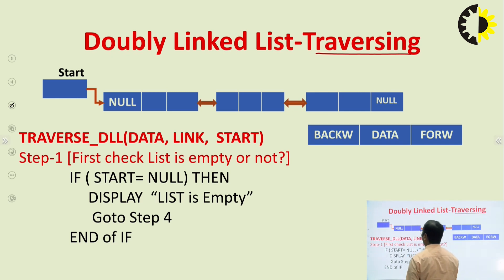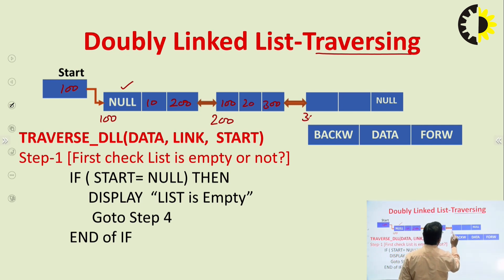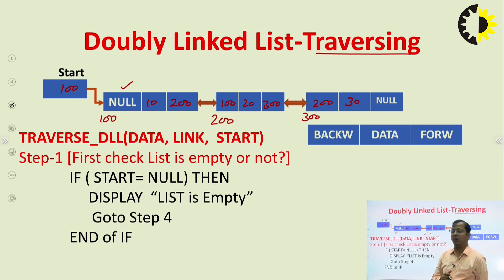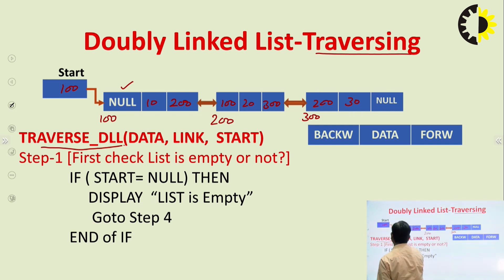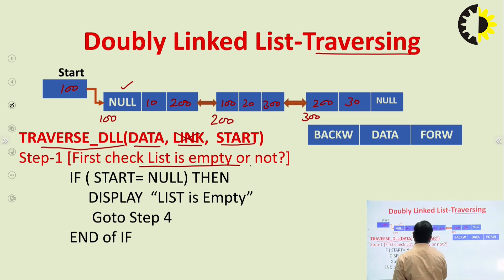Here we have taken one example. The first node has address 100. We have to traverse it, and in the traversing we are printing the value of each node. So we will use the traverse function. In the traverse function, we will use the data field, start field, and forward and backward fields. First we have to check whether the list is empty or not, because if the list is empty we cannot traverse it.